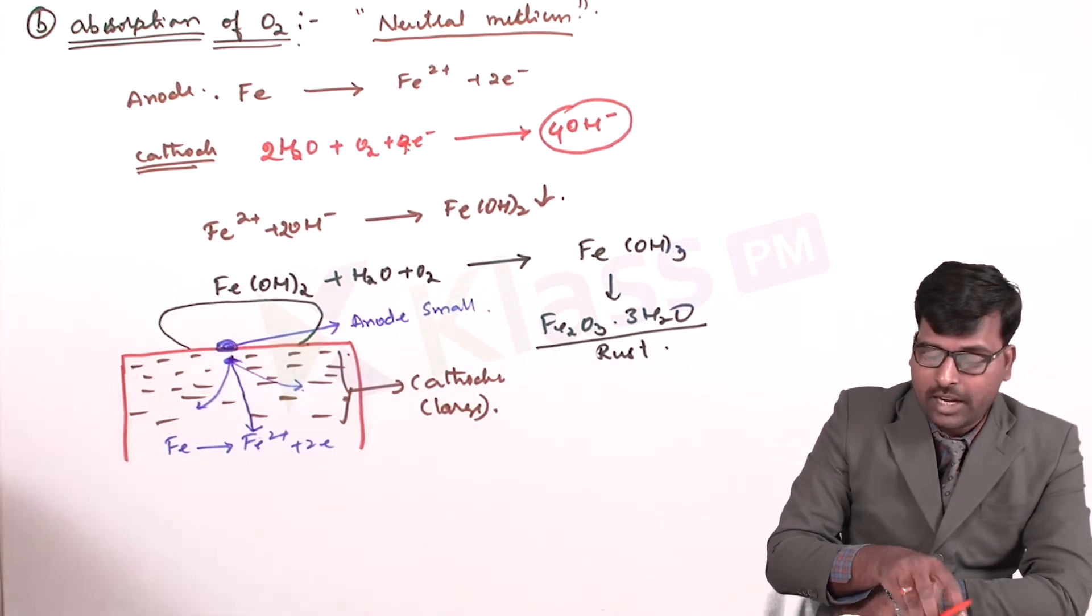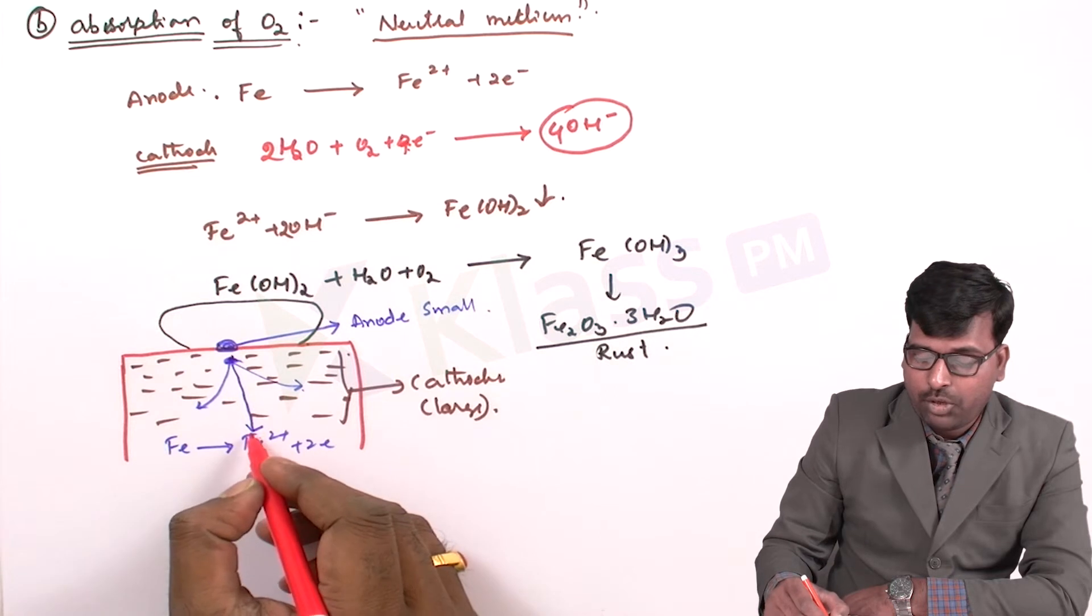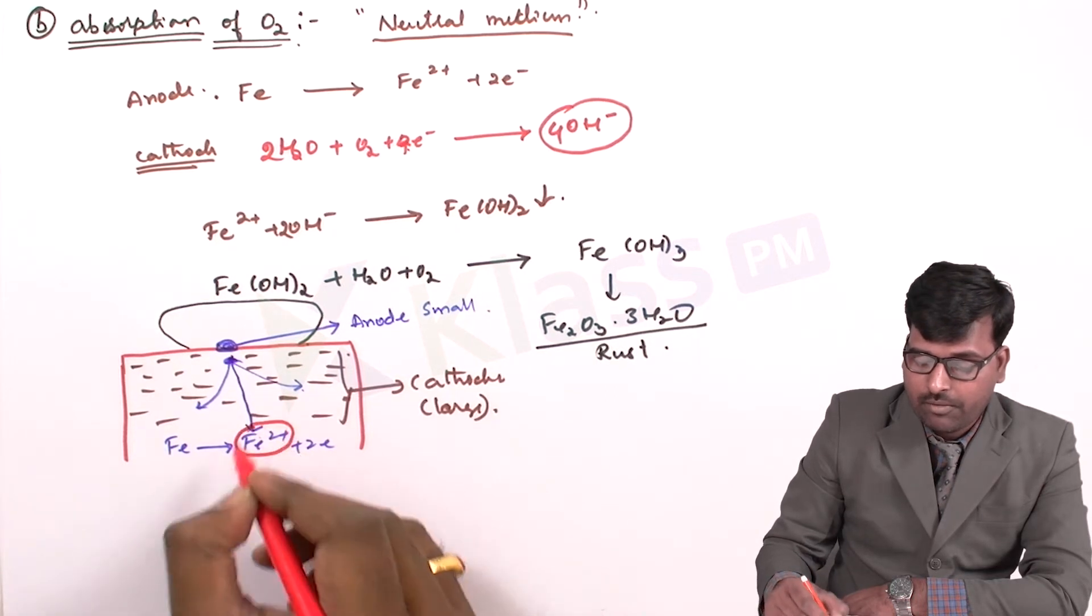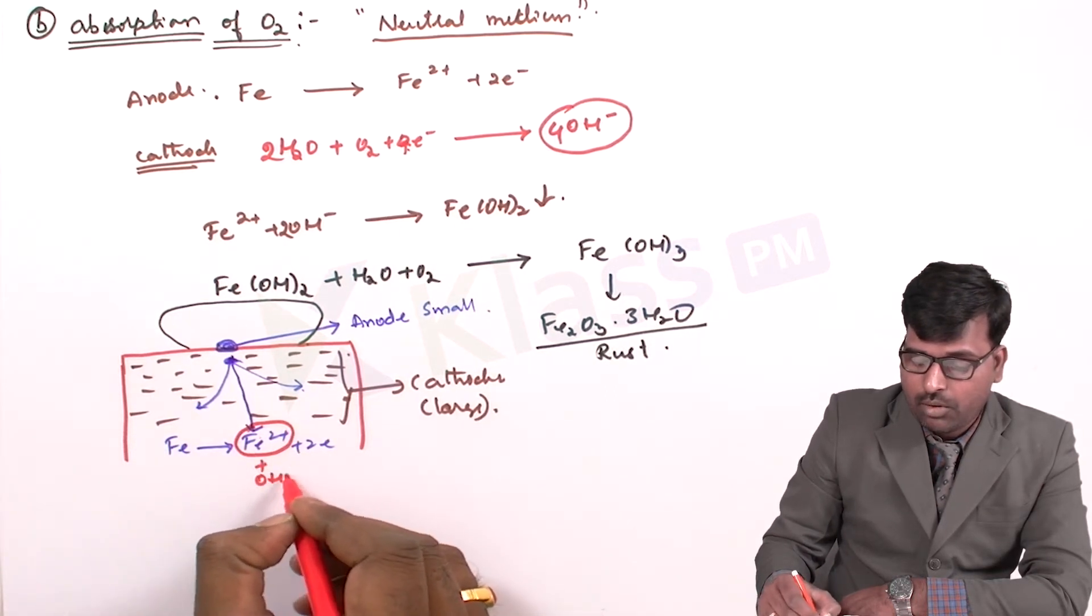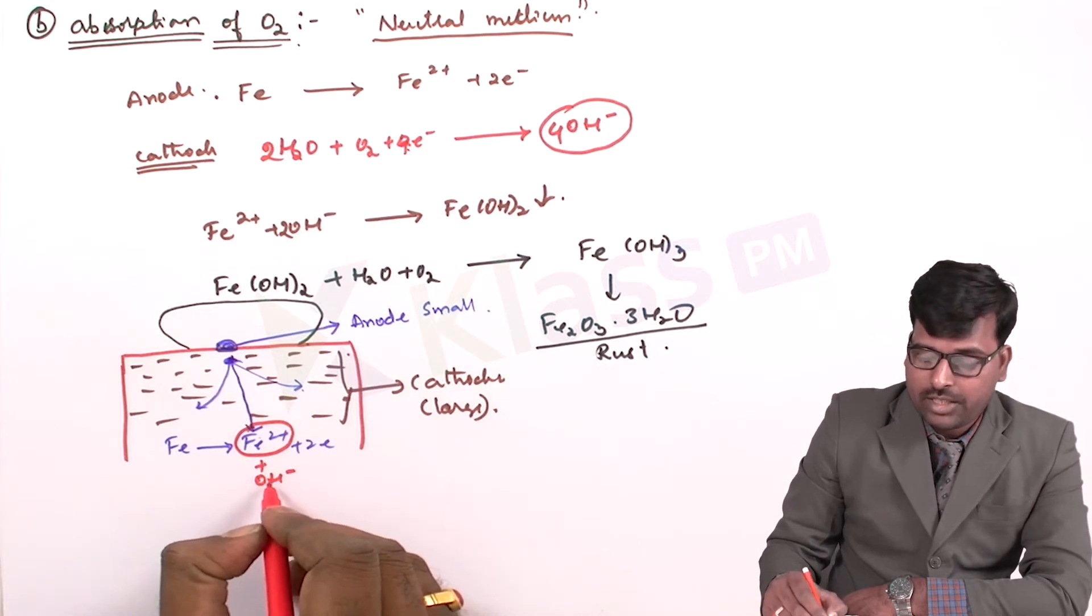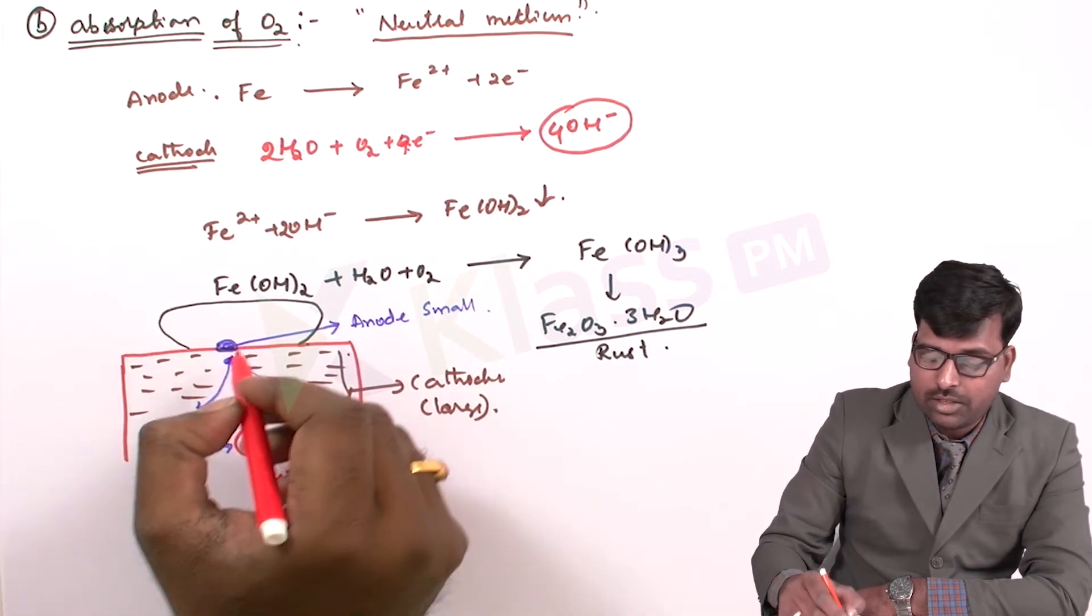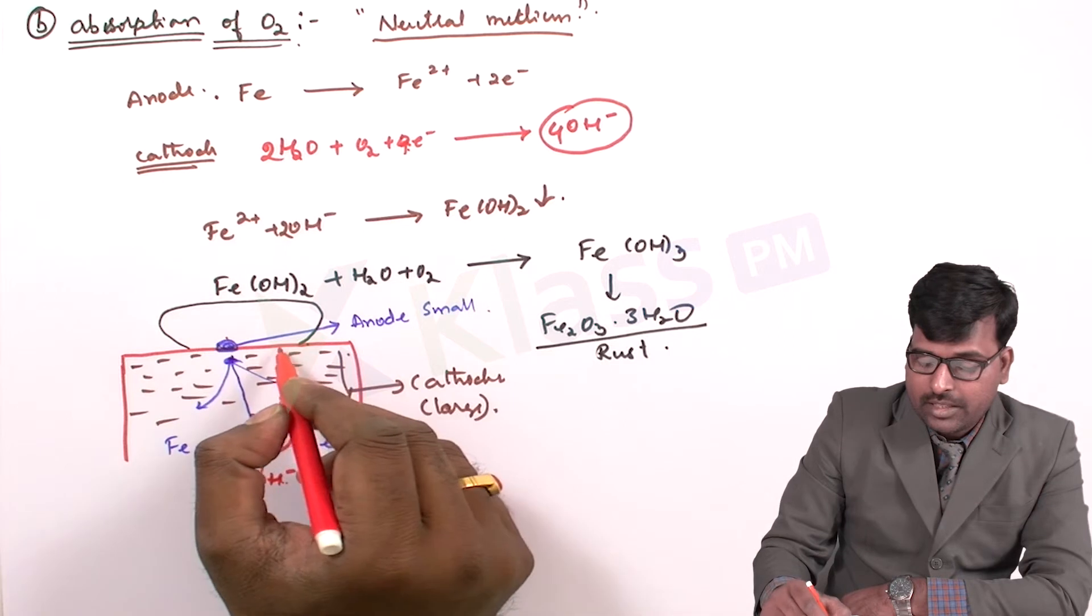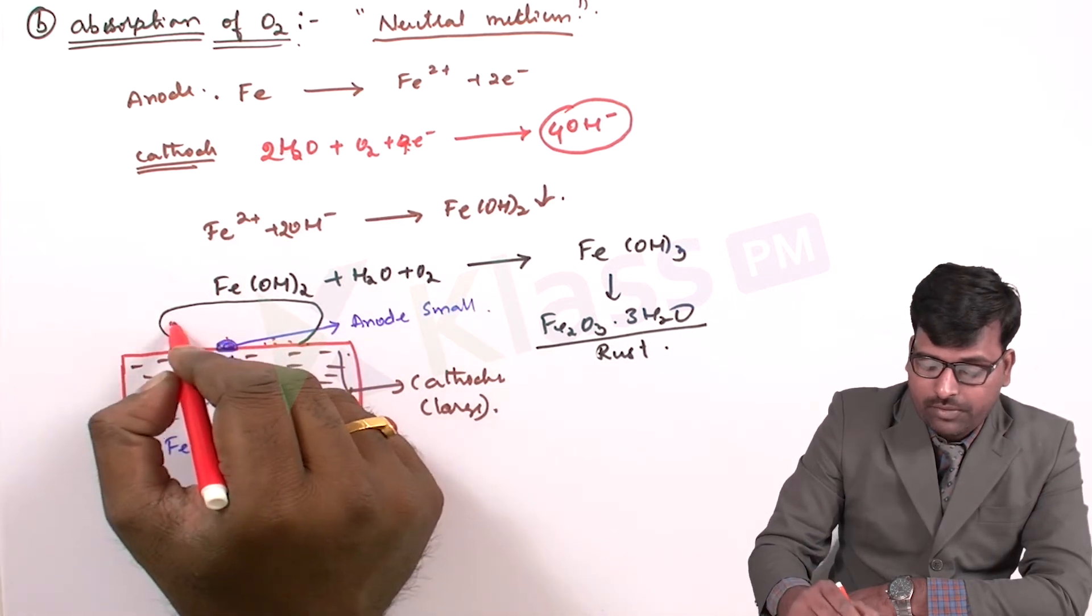And in that surrounding area, Fe2+ ions will be taken by OH- ions. Because these OH- ions are formed in surrounding areas of the water.